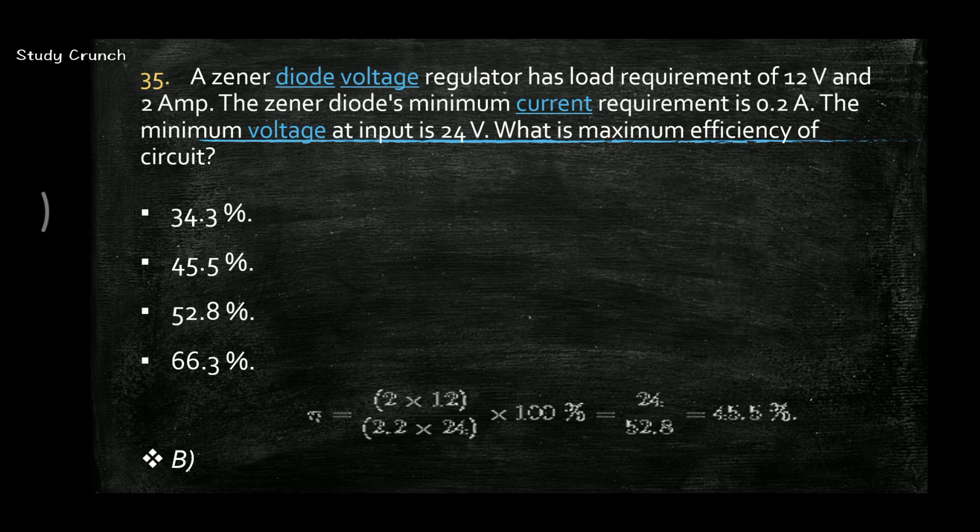Next, a Zener diode voltage regulator has load requirement of 12V and 2A. The Zener diode's minimum current requirement is 0.2A. The minimum voltage at the input is 24V. What is the maximum efficiency of the circuit? So for the efficiency, we multiply 2 into 12, that is 2A current into 12V, divided by 2.2 into 24 into 100%. This gives us 45.5%, that is B.